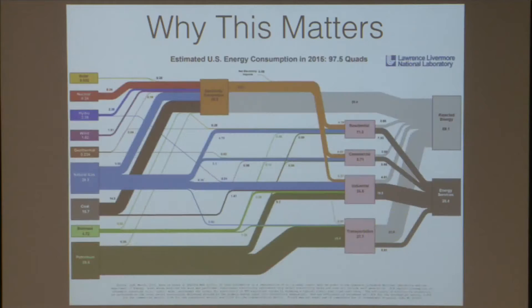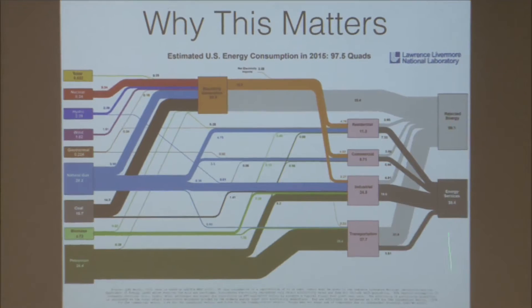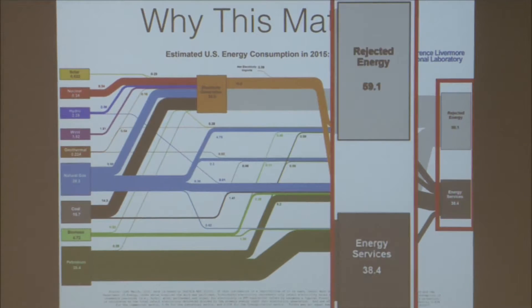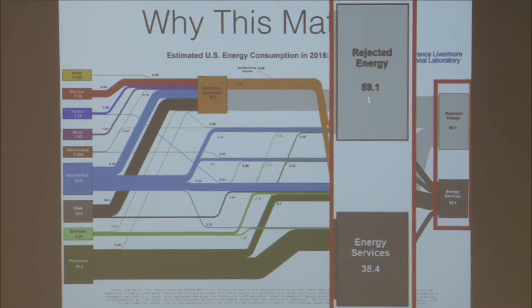If you look at this chart — which you can't read from here, but if you blow it up — these are all the inputs on the left, all the ways we make energy, here's how we use it, and here's the result. The punchline I want to get to is rejected energy. Whatever the units, it doesn't matter — it's 60%.